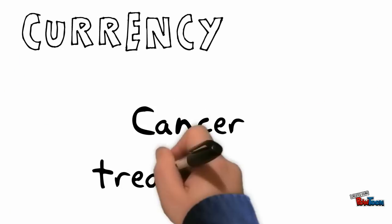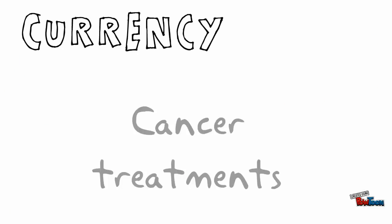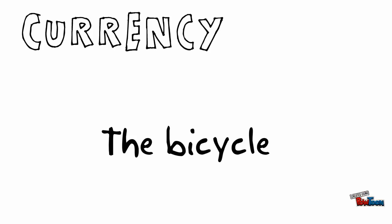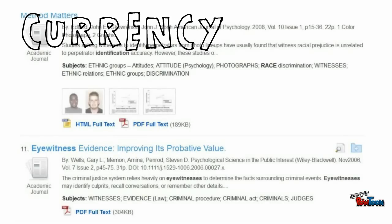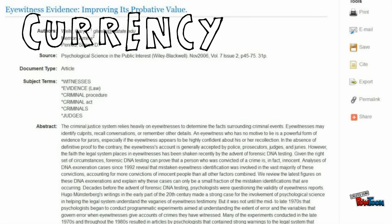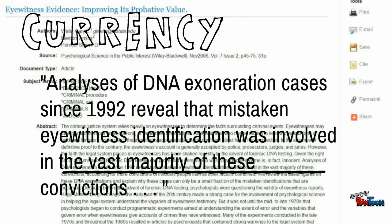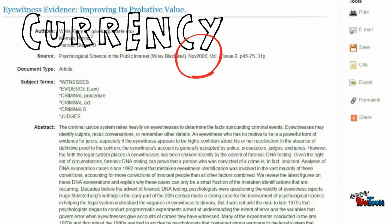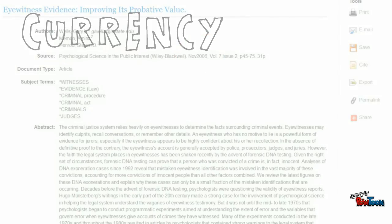Next, currency. For some topics, current information is really important, and for other topics, not so much. And sometimes important events change how your topic is written about and understood, like DNA testing did for our topic. Being aware of how writing on your topic can change over time makes you more aware of publication dates and helps you choose better sources.